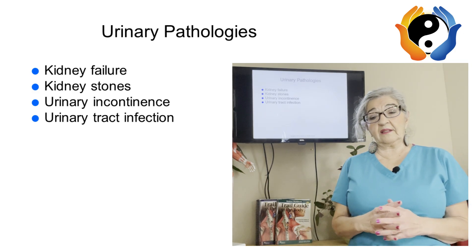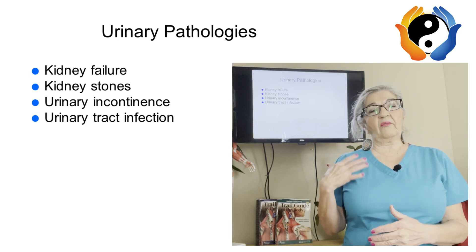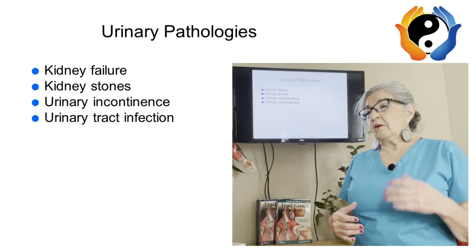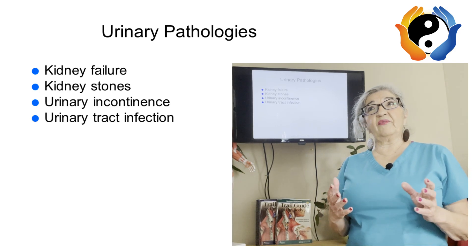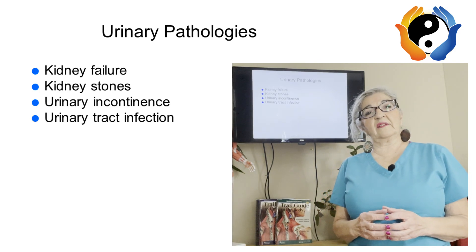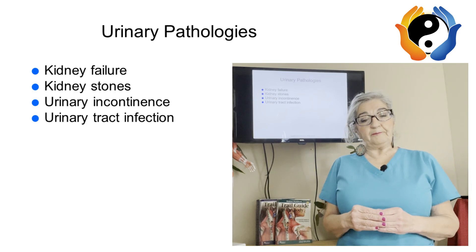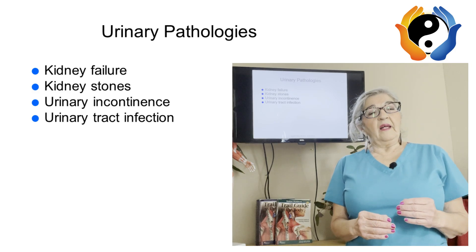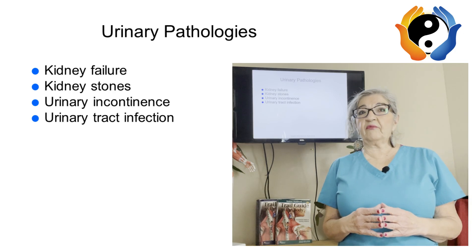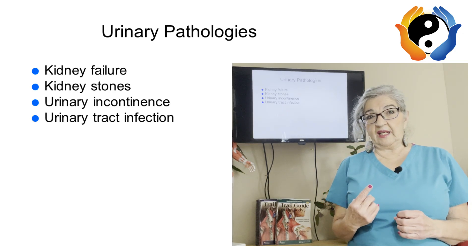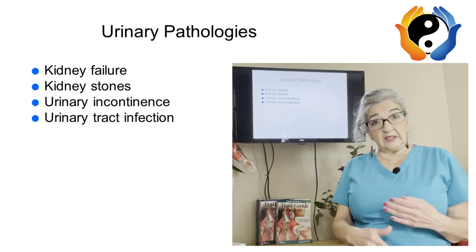The right kidney is slightly lower also because the right lung has three lobes compared to the left lung which only has two. Another fun fact: your kidneys filter your blood at about half a cup per minute, which adds up to about 45 gallons in one day — not that you have 45 gallons of blood, but it filters your blood continuously.